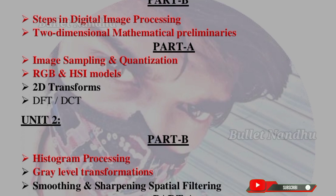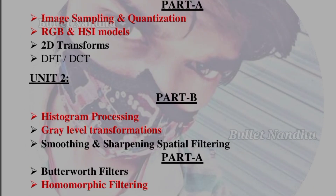Unit 2 Part B covers histogram processing, gray level transformations. Unit 2 Part A covers root filters and the homomorphic filter.